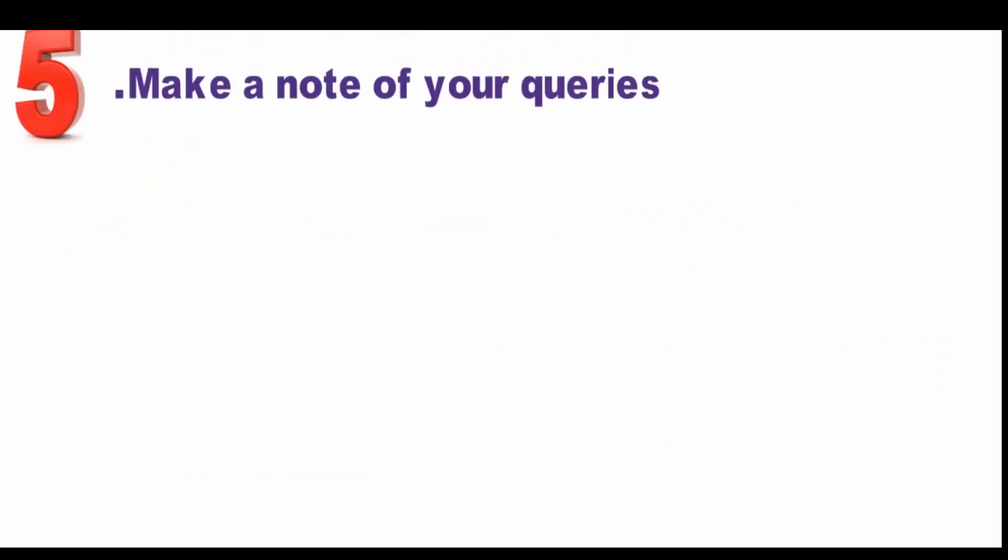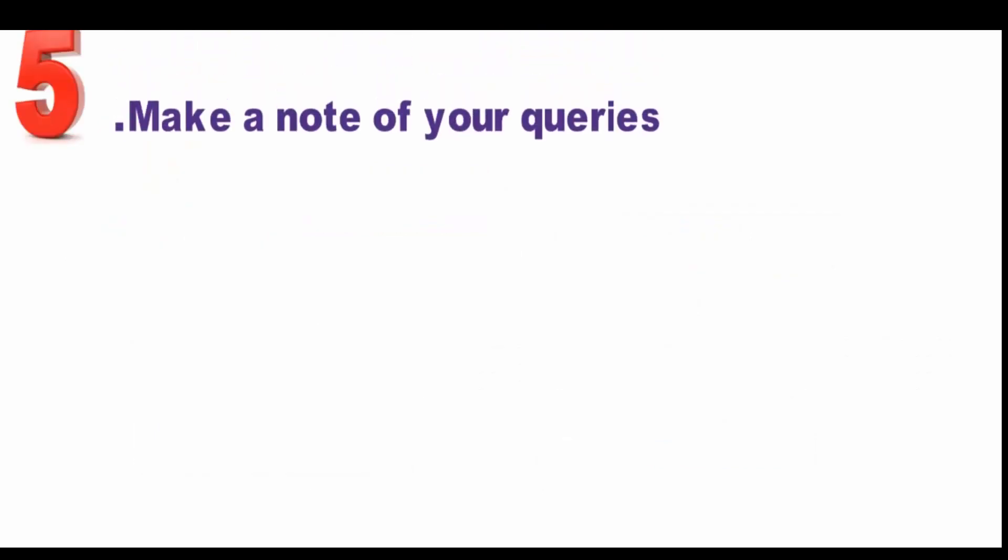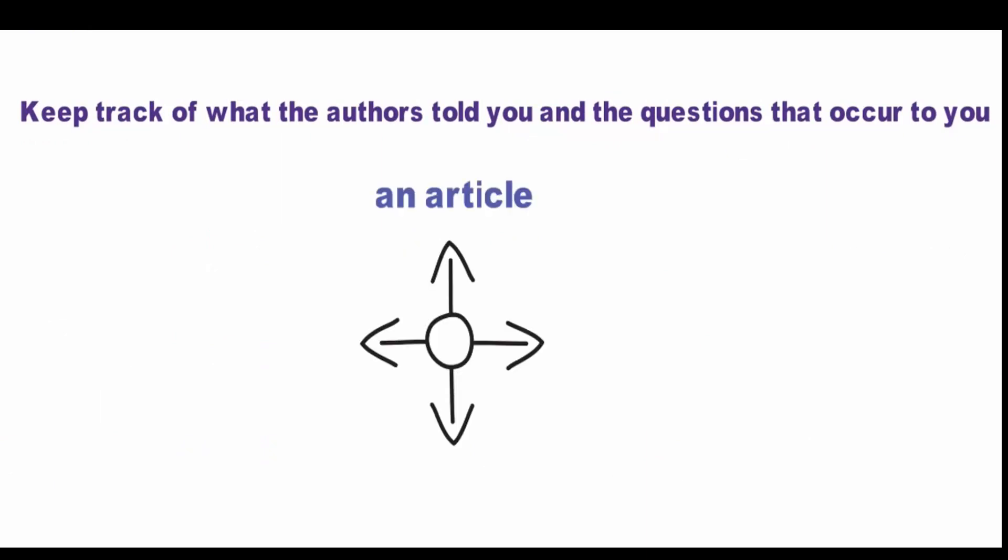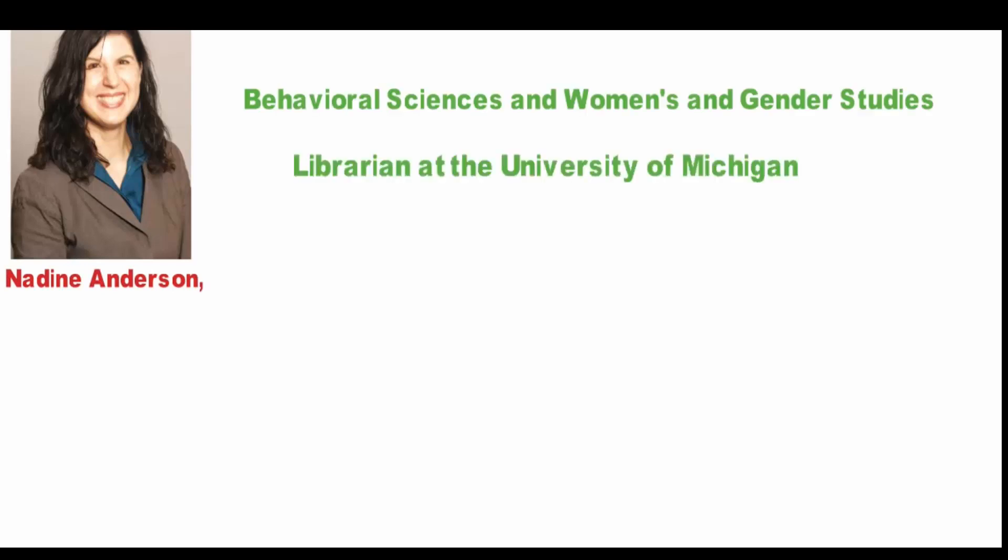Make a note of your queries. It is a good practice to note all the questions that cross your mind while reading any published literature. If possible, you should map the question to the resource it is based on. Keep track of what the authors told you and the questions that occur to you whenever you read anything: an article, a book, a book chapter, a dissertation, etc., advises Nadine Anderson, behavioral sciences and women's and gender studies librarian at the University of Michigan. She says that this will also help in ensuring that there is no unintended plagiarism in your research paper.